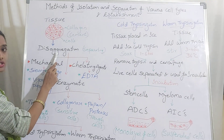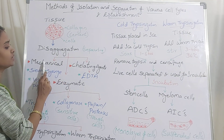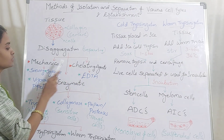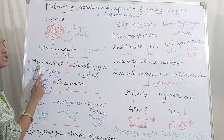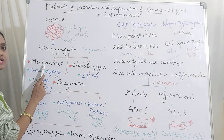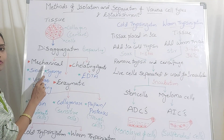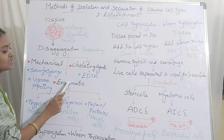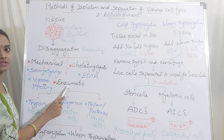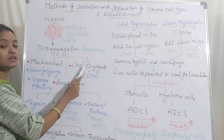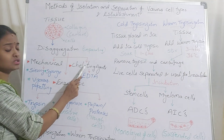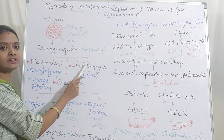The disaggregation process is classified into three types: the first one is the mechanical method or the physical method of disaggregation; the second one is the enzymatic method; and the third one is disaggregation using chelating agents.